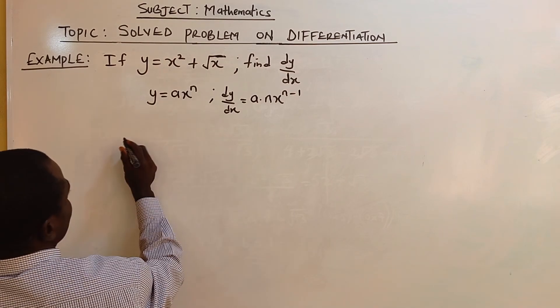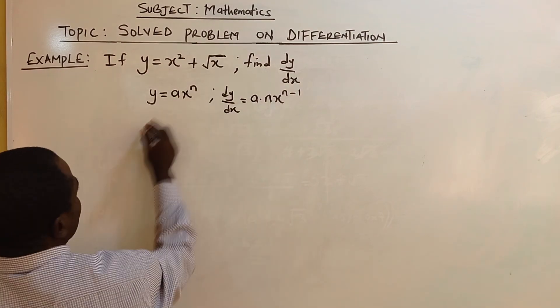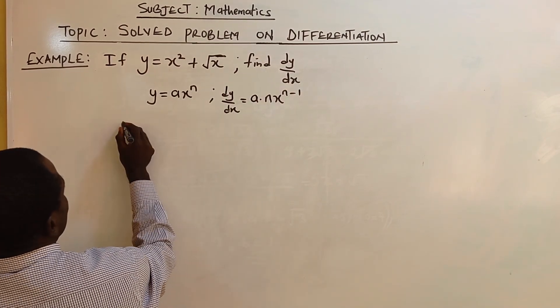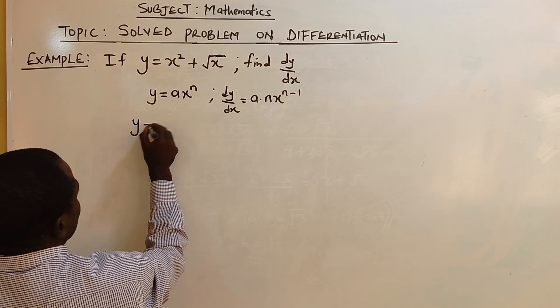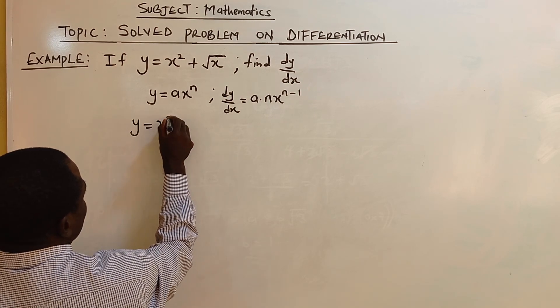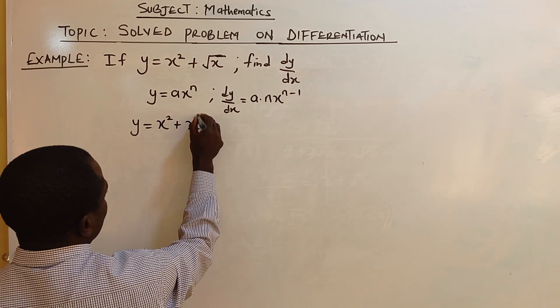We apply it here. Don't forget that this square root is half, standing for x raised to the power half. And you have y equals x squared plus x raised to the power half.